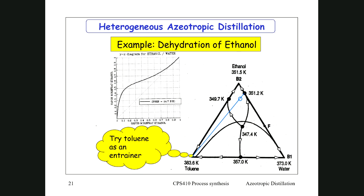If we mix those two and land at that position, we can distill. From that mixture point we can distill with the distillate being at the ternary azeotrope at 347 K, and we would be able to make pure ethanol as the bottoms product. If we choose the position of that mixture correctly, the distillate will lie inside the liquid-liquid equilibrium region.